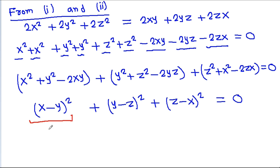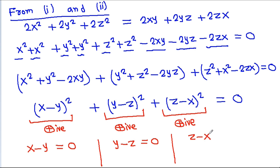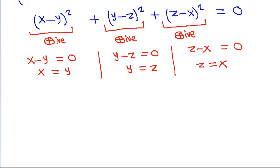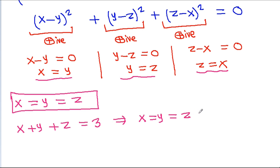So we have x minus y whole square plus y minus g whole square plus g minus x whole square is equal to 0. Since each squared term is non-negative and their sum equals 0, we get x minus y equal to 0, y minus g equal to 0, and g minus x equal to 0. Therefore x is equal to y is equal to g. And since x plus y plus g equals 3, we get x equal to y equal to g equal to 1.